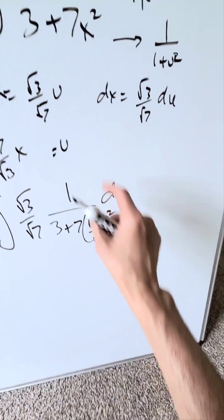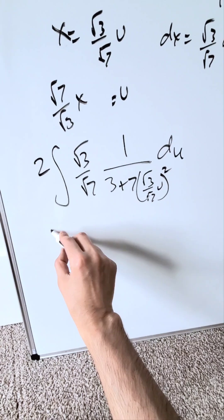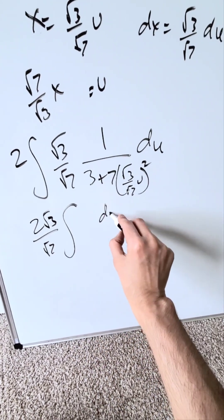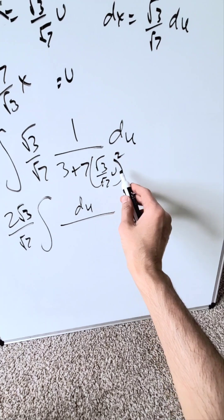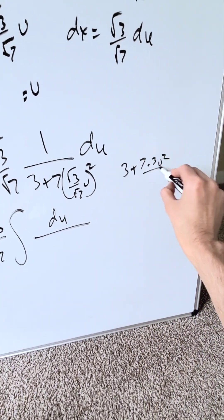And I've put it down but it's a square. It's an x squared. Open up all of this and bring these constants out. I have a 2 root 3 over root 7, and I'm looking here at a du over. If you open this up, what will you have? You'll have a 3 plus 7 times 3u squared over 7.